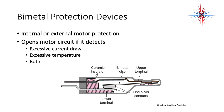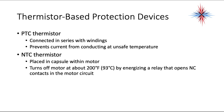Bimetal protection devices are used for internal or external motor protection. They open a motor circuit if they detect excessive current draw, excessive temperatures, or both. A bimetal disc changes based on temperature — too much current causes high temperature and warps the disc, and excessive temperature also warps the disc. As the disc warps, it opens the contacts and shuts off the motor. Thermistor-based protection devices use a PTC thermistor connected in series with the windings to prevent current from conducting at an unsafe temperature. NTC thermistors placed in capsules within a motor turn off the motor at about 200°F by energizing a relay that opens normally closed contacts in the motor circuit.